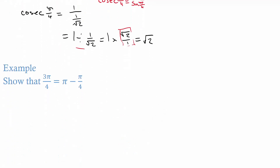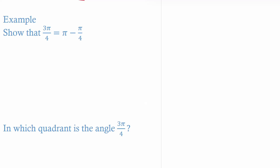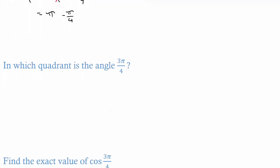Another example: show that 3π/4 is the same as π minus π/4. Working with 3π/4, I know that's the same as 4π/4 minus π/4, because 4π minus π is 3π. So 4π/4 minus π/4 — the 4s cancel — leaving π minus π/4.